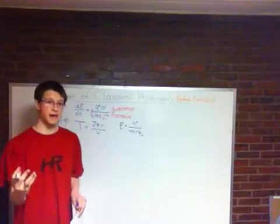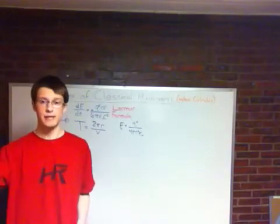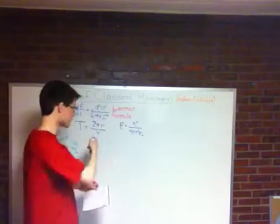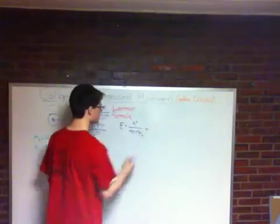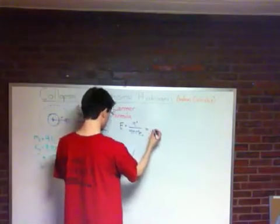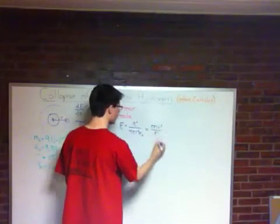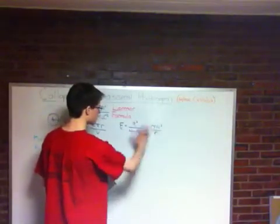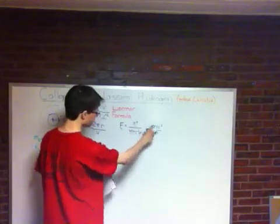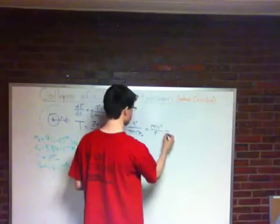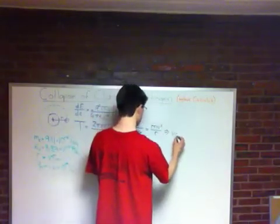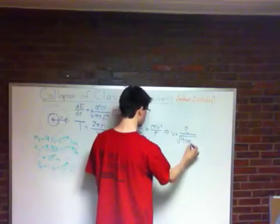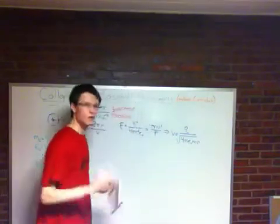But this doesn't have a v in it. So this is where we pull out our classical mechanics of rotating objects. If an object is rotating around and being held in, then there's a centripetal force. So this force must also serve as a centripetal force in this system. The centripetal force of a rotating object is equal to mv squared over r. So one of these r's are going to cancel, and then we'll multiply by the r, divide by the m and take the square root of everything, and we'll find that the velocity of the electron is equal to its charge divided by the square root of 4 pi epsilon naught m r.